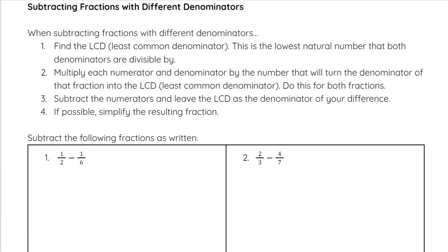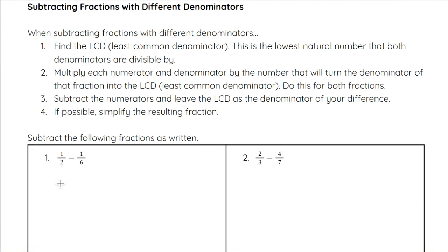Looking at subtracting fractions with different denominators — just like when we add fractions with different denominators — we need to get the denominators to be the same using either the LCD method, which we will practice first, or we can just multiply the denominators together as our new common denominator, even though it may not be the least common denominator. Either option is fine, and once the denominators match, we subtract just like with addition.